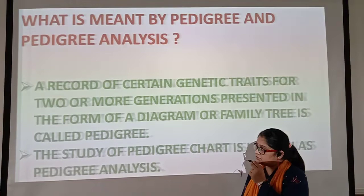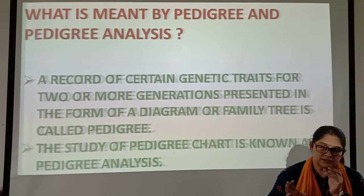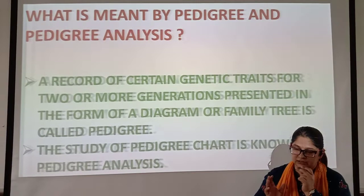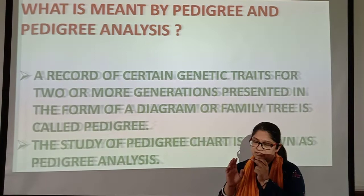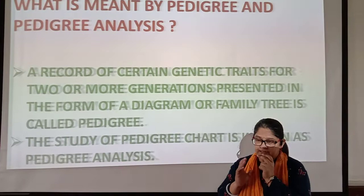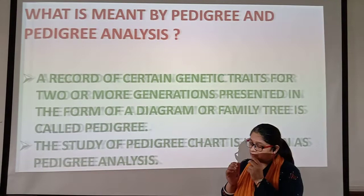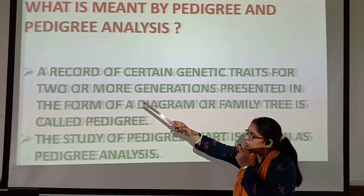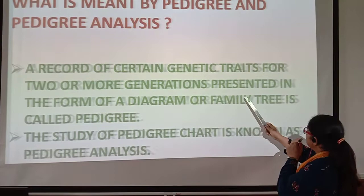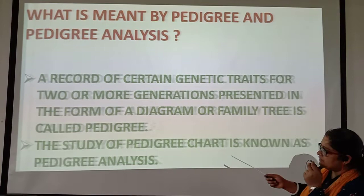First of all, we must know what a pedigree is. A pedigree is a chart which consists of different symbols — some are squares, some are circles — linked with each other by horizontal and vertical lines, representing generations, so that we can study traits inherited from one generation to the next. A pedigree chart is a record of certain genetic traits for two or more generations presented in the form of a diagram, which we call a family tree. The study of pedigree charts is known as pedigree analysis.